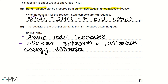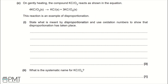We could also add that electron shielding increases, but that would get you the same mark as atomic radii increases. This is a very common question and I would recommend learning these stages so that you can apply them to very similar questions.